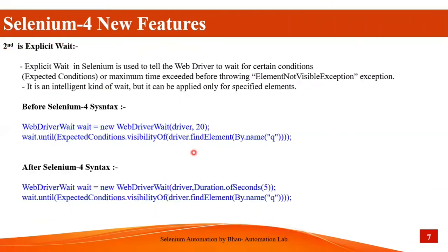Explicit wait is used to tell the WebDriver to wait for certain conditions, or a maximum amount of time, before throwing an ElementNotVisibleException. It is an intelligent kind of wait but can only be applied for a specific element. Before Selenium 4 the syntax is: WebDriverWait wait = new WebDriverWait(driver, seconds); wait.until(ExpectedConditions.visibilityOfElementLocated(driver.findElement(By...))). It will wait for the specified time before throwing an ElementNotVisibleException.